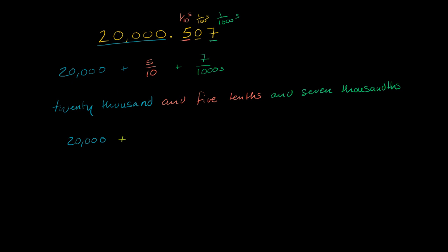so this 5 tenths is the same thing as 500 over a thousand. And the 7 tenths is, or the 7 thousandths is still 7 thousandths. And these two combined are 507 over a thousand.